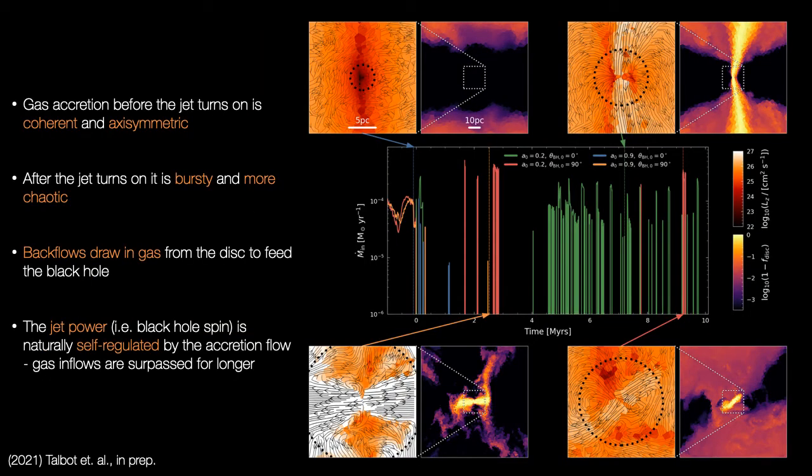We also find clear evidence that the power of these jets is regulated by the accretion flow. Here we're looking at some of these simulations at times when the gas can reach the alpha disk. The slices show the Z component of the specific angular momentum and slices of a tracer that identifies all material that's not in the circumnuclear disk.